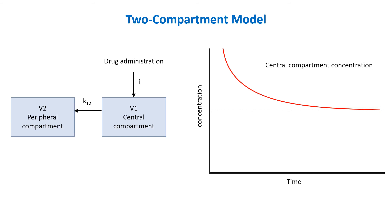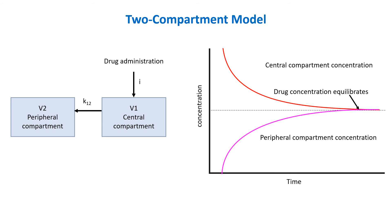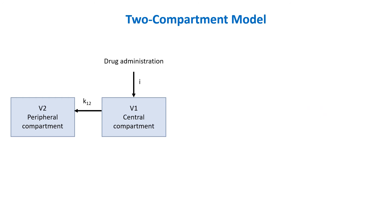The same process causes the concentration of drug in the peripheral compartment to rise. The distribution phase occurs until the drug concentration in the central and peripheral compartments is equal. Once equilibrium is established between the two compartments, the drug is eliminated primarily from the central compartment via metabolism or excretion. This phase is slower and also follows first-order kinetics.